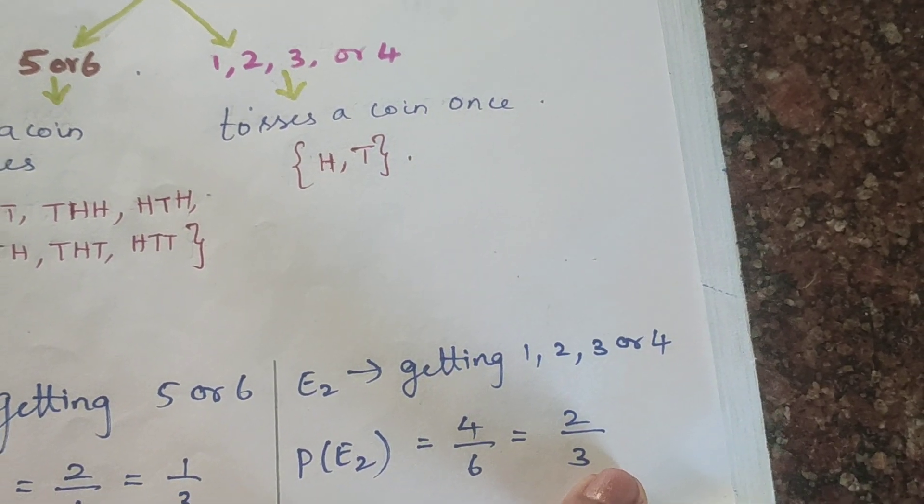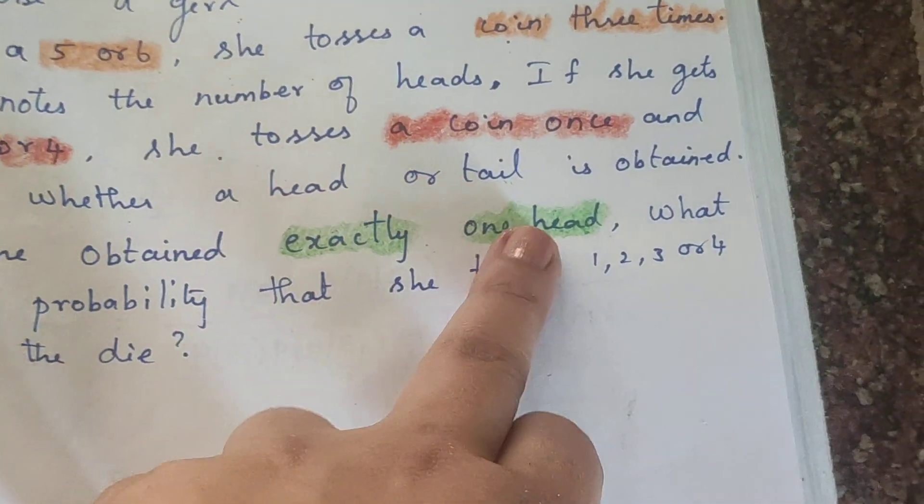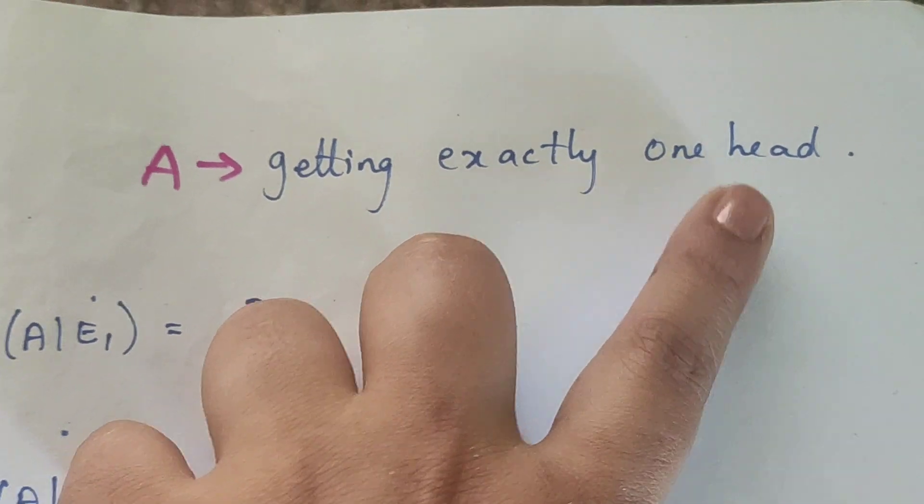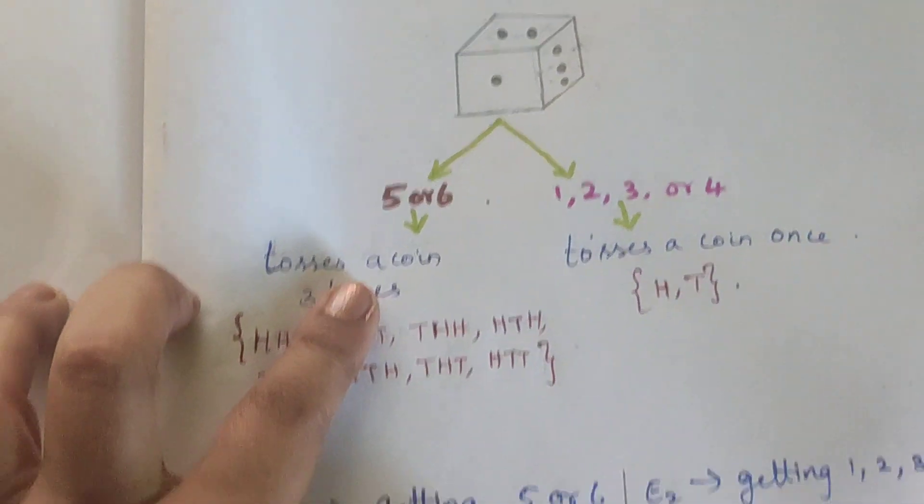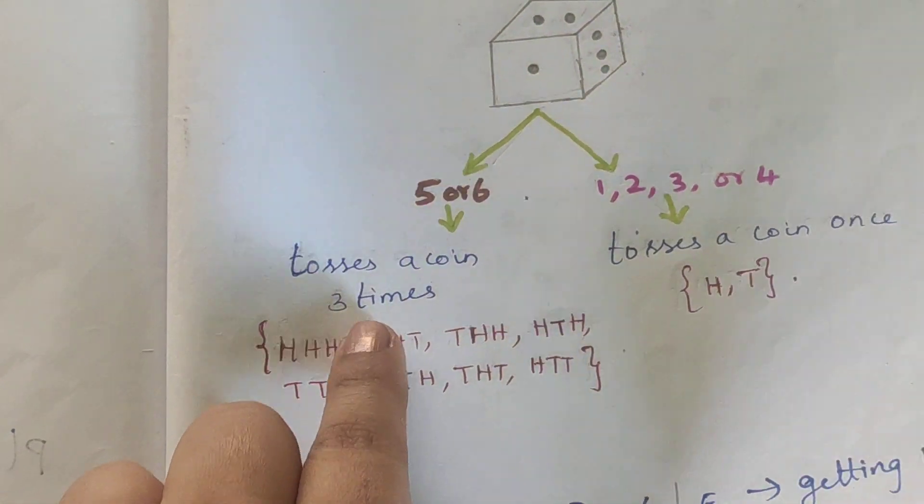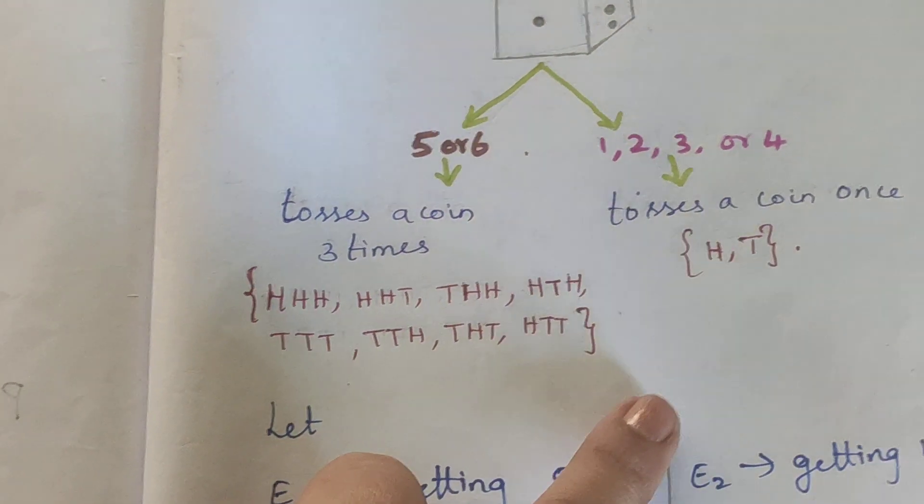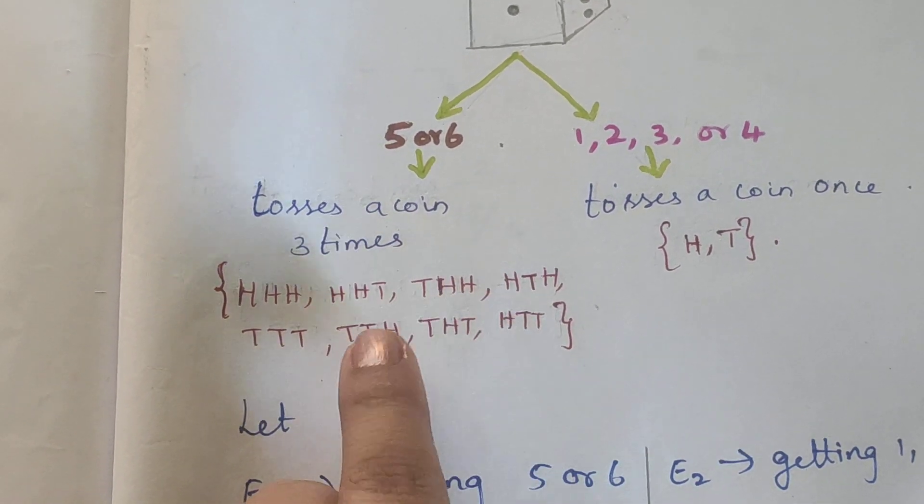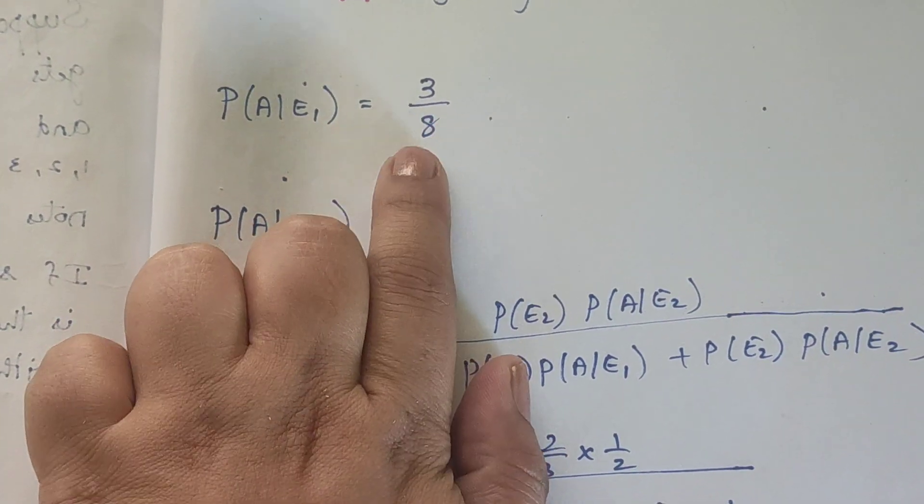Now for exactly one head: if E1 occurs, meaning we got 5 or 6, we toss 3 times. The probability of getting exactly one head with 3 tosses is 3 by 8.